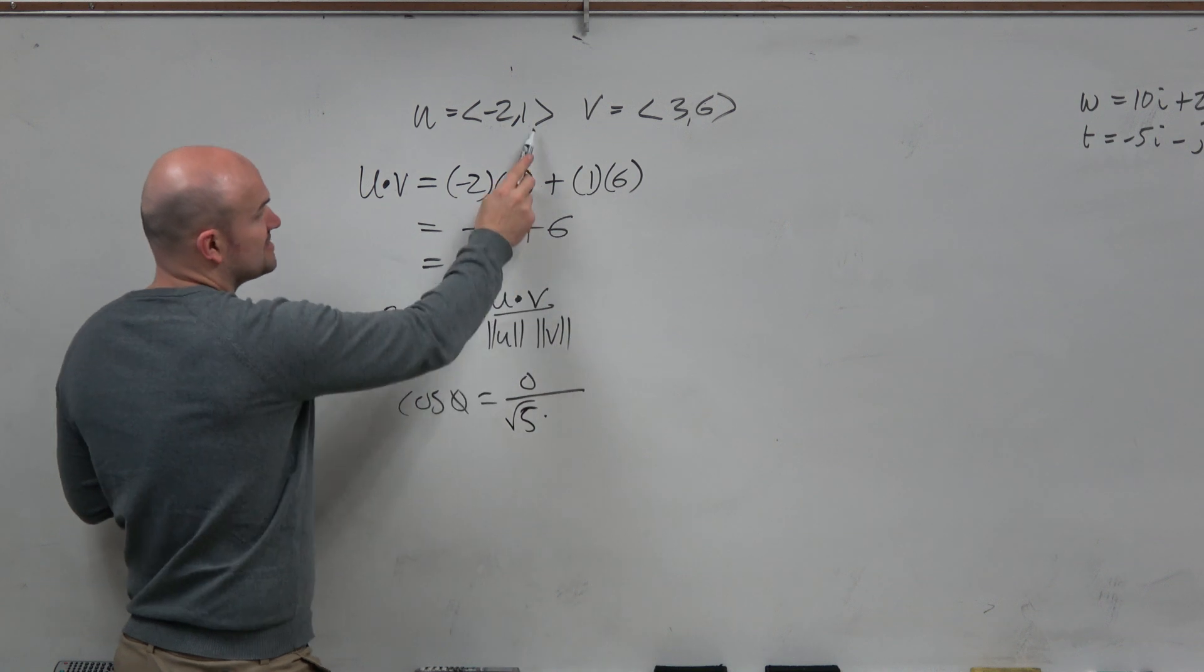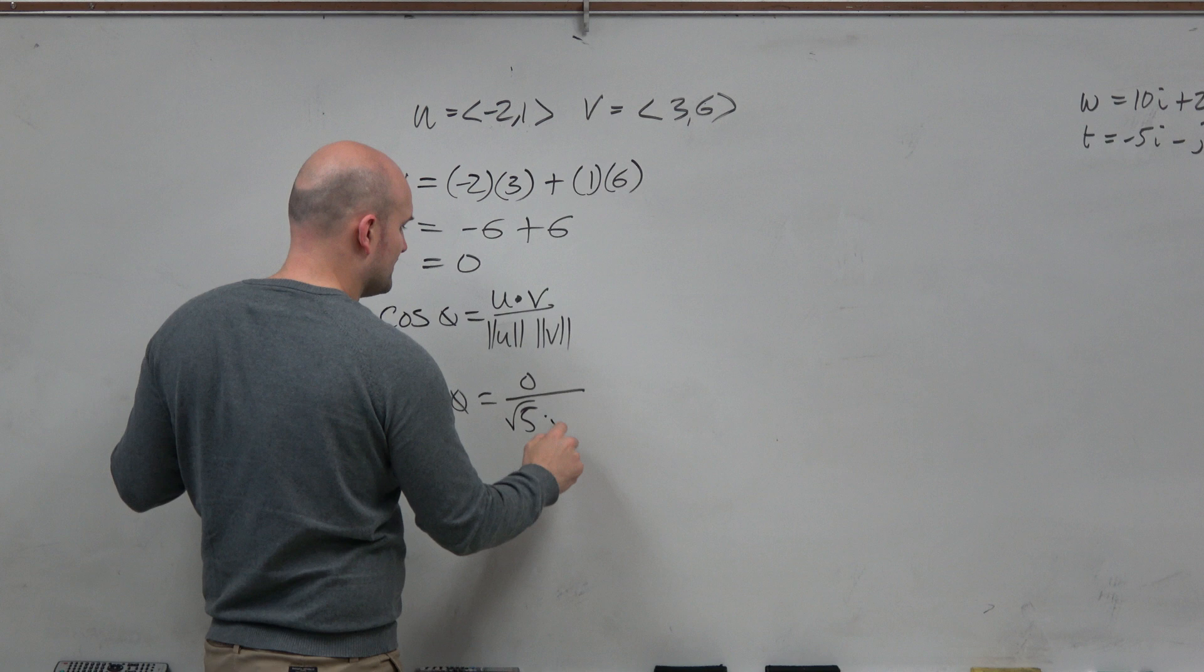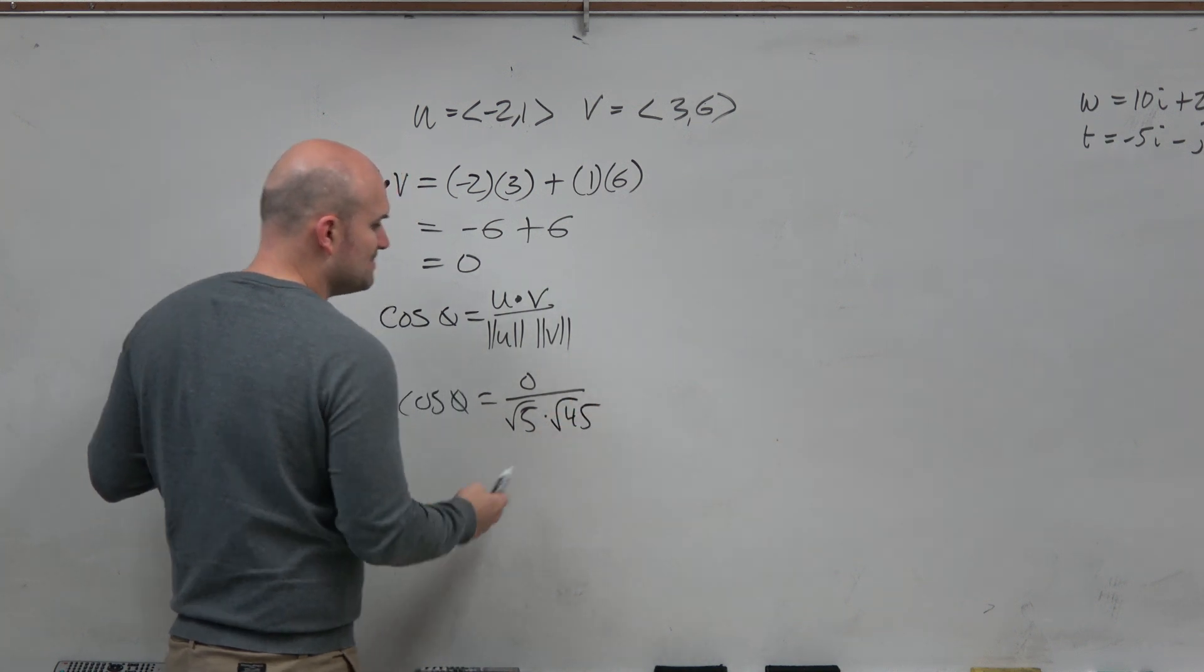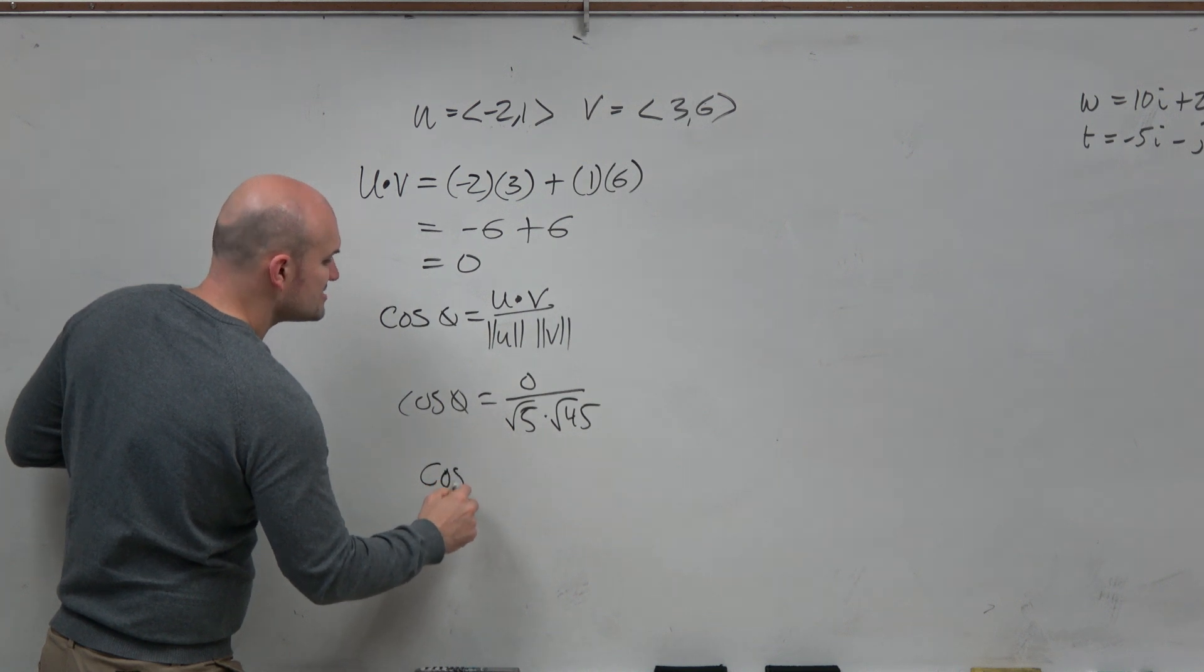And that's going to be times, not dot product, but times. This is going to be 9 plus 6, that'd be 45. Now, again, that's a waste of time because 0 divided by anything is just going to be 0, right?